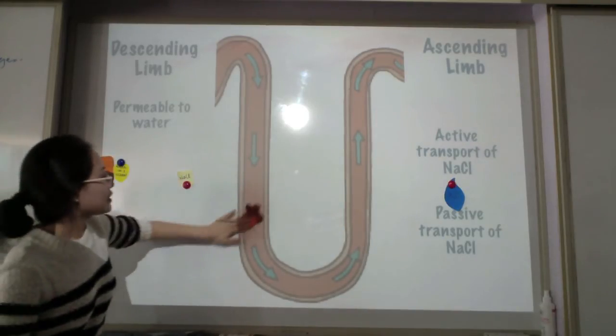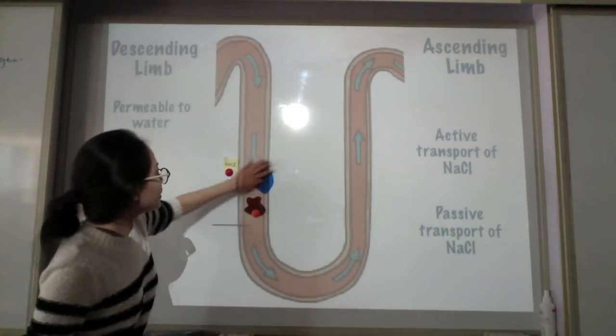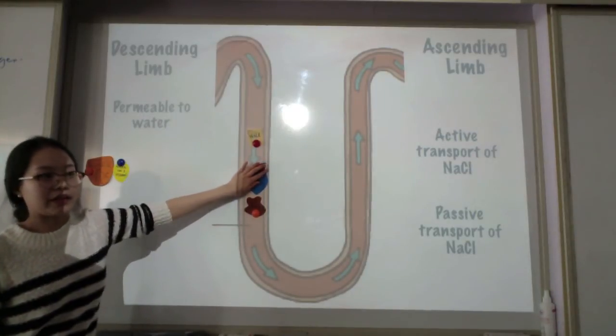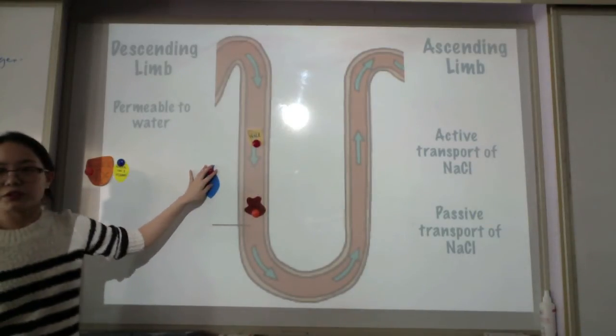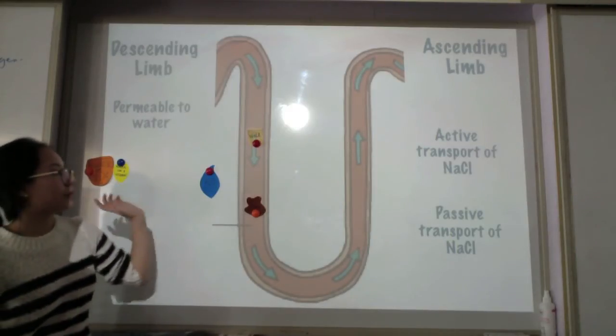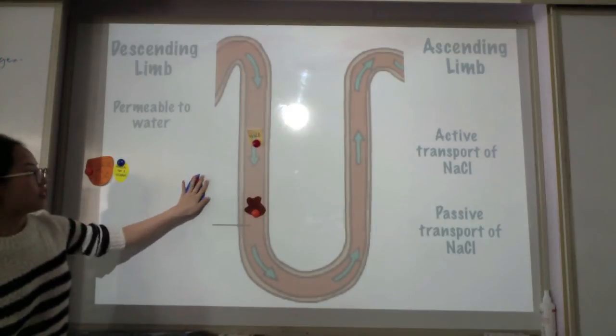And then the urea is in here and then there's NaCl and H2O. However, the descending limb is permeable to water so water will be again reabsorbed. And it's important to remember that when I say absorb it's not saying absorbing to the tubule but rather absorb to the body which is to the medulla.